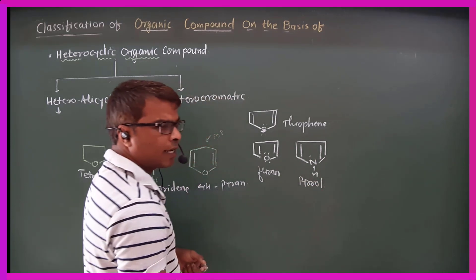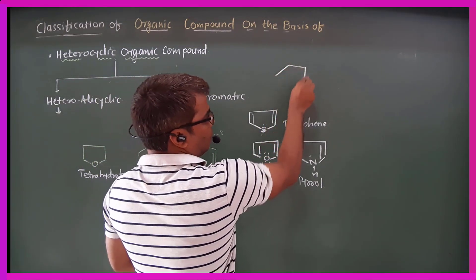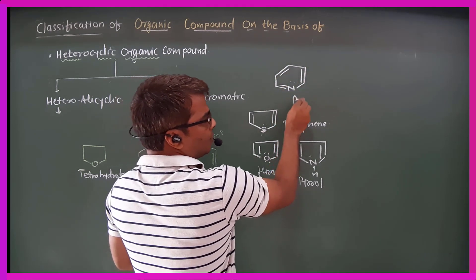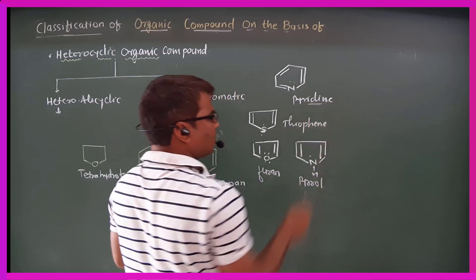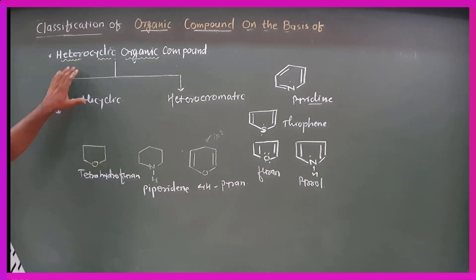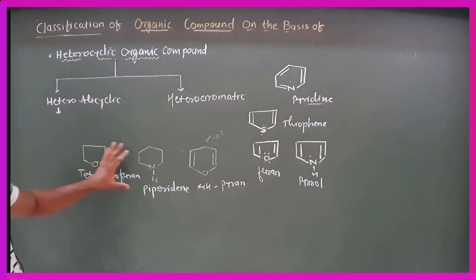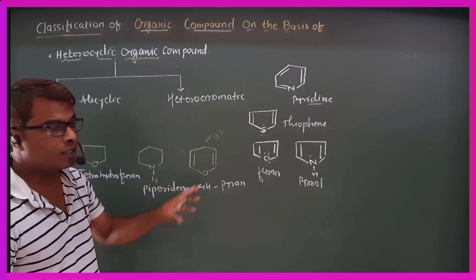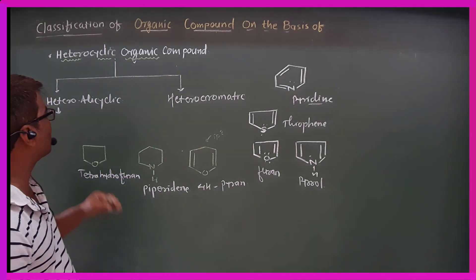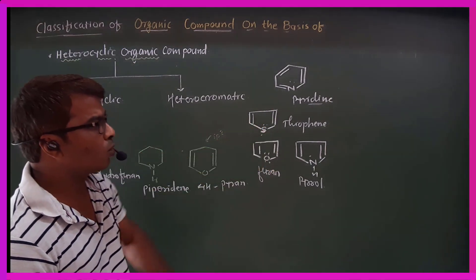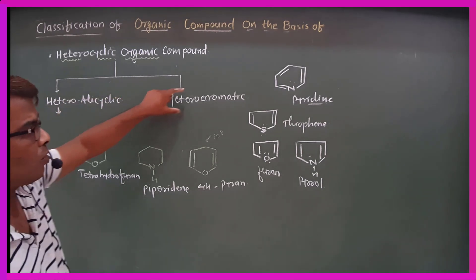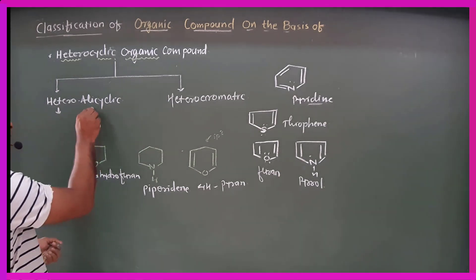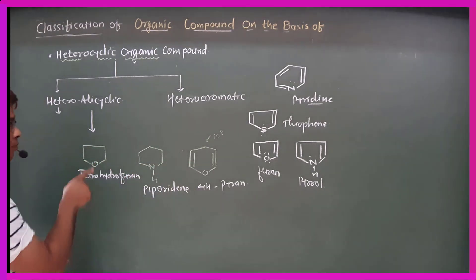These are all examples of heterocyclic compounds — cyclic compounds containing carbon atoms along with heteroatoms. Additionally, there are alicyclic compounds, which are cyclic compounds in which the ring contains heteroatoms.